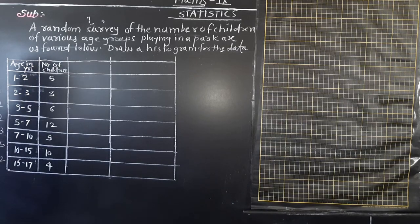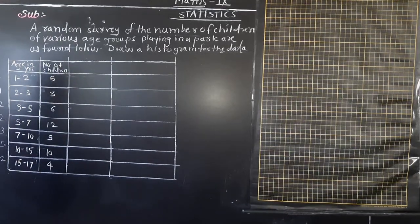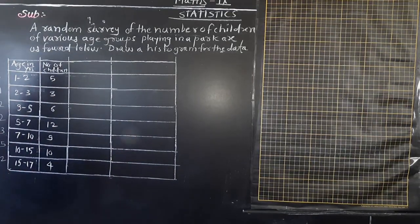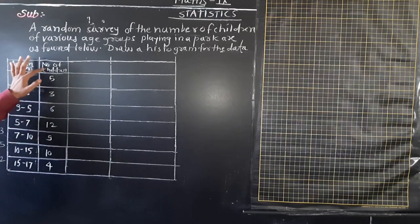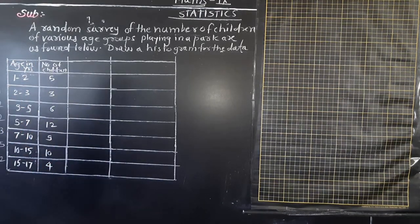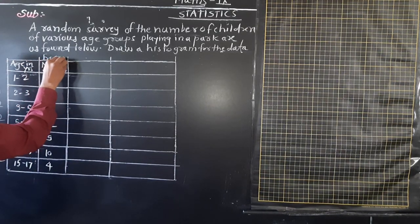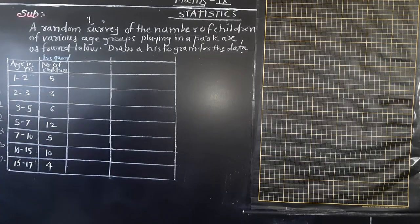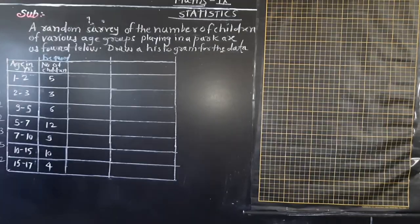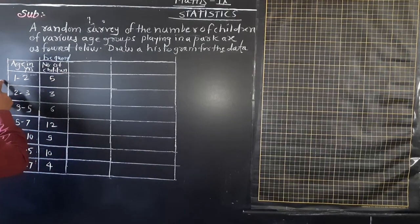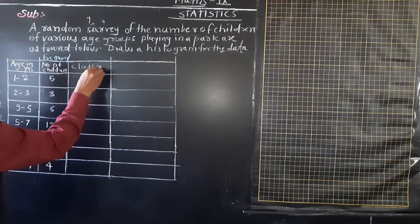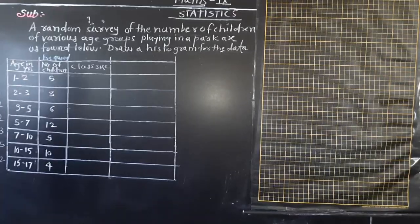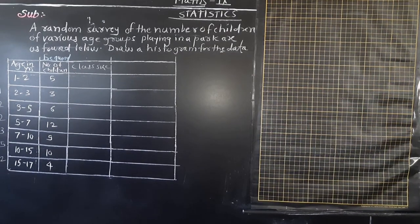When class size is different, we need to do some modification in the given data. So first, the two columns - age in years and number of children - we are going to keep as they are. Number of children means frequency. We are going to use this as frequency. Now one more thing: we need to find out class size. Class size is also known as width of rectangle.